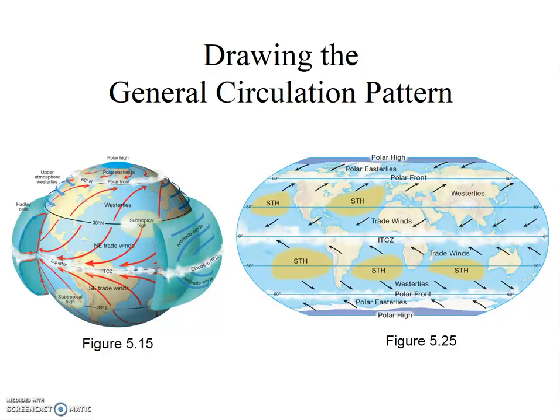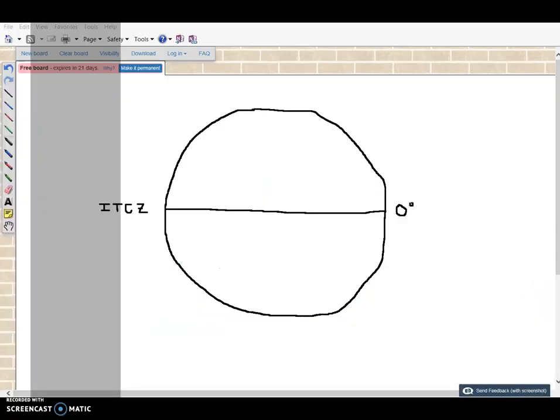Lastly, from the polar high, create the polar easterlies by also drawing divergent clockwise flow. I'll show you my simple sketch as I go here to show that you don't need to be an artist to do this.